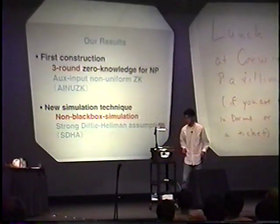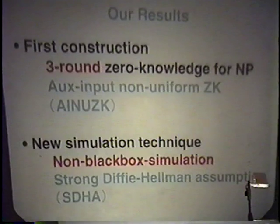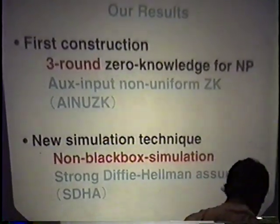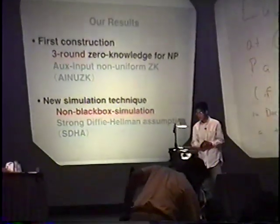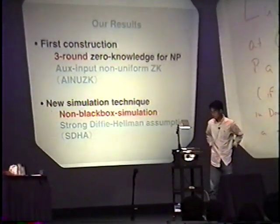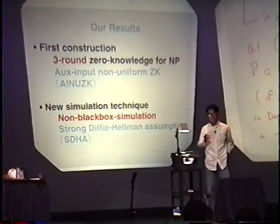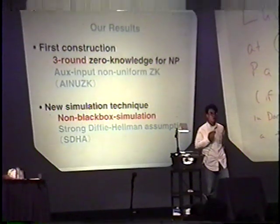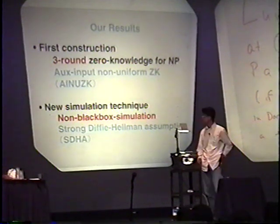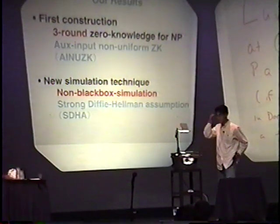Let me show you our results. I'm going to present the first constructions of three-round zero-knowledge protocol for any zero-knowledge. This is not a black-box simulation of zero-knowledge, but achieved auxiliary input from zero-knowledge. This is a weaker notion of zero-knowledge. And in order to demonstrate our zero-knowledge property, I introduce a new simulation technique. This is a non-black-box simulation, and this is based on the computational assumption for strong discrete logarithm assumption.